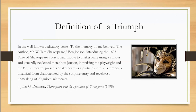The concept of a literary triumph originates in the Roman triumph and other ancient forms, which all privilege the center as the place for the one who is triumphant. In this place, Britain is really the triumphator because it has a Shakespeare to show. Here is how Professor Demaret accounts for the form in the Shakespeare First Folio: in the well-known dedicatory verse 'To the Memory of My Beloved, the Author, Mr. William Shakespeare,' Ben Johnson, introducing the 1623 Folio, paid tribute to Shakespeare using a curious and generally neglected metaphor — presenting Shakespeare as a participant in a triumph, a theatrical form characterized by the surprise entry and revelatory unmasking of disguised aristocrats. I hasten to clarify that Professor Demaret would probably object to being cited in this context, at least at first. But for me, this quote was a torch in a dark night.